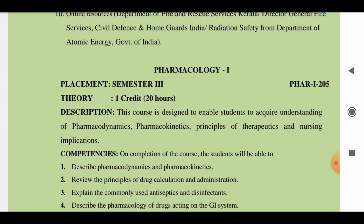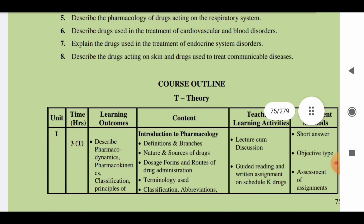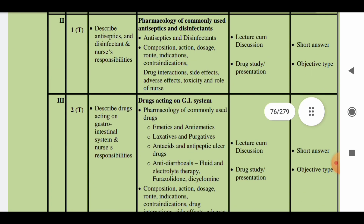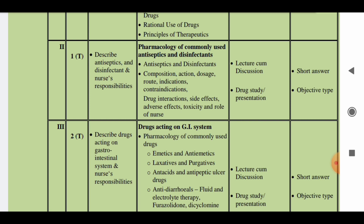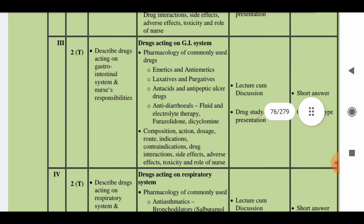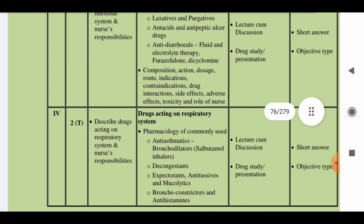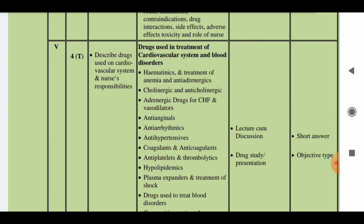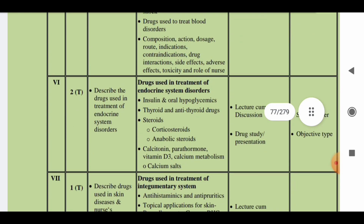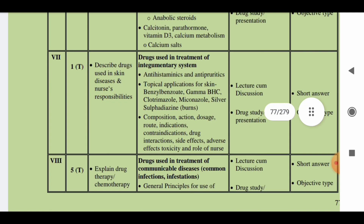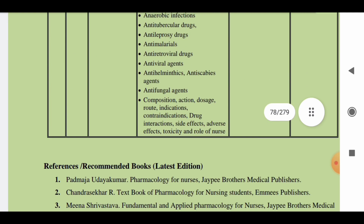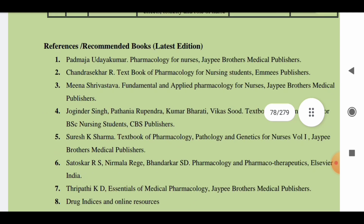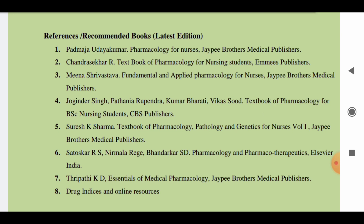The second subject is Pharmacology. You have 20 credit hours in Pharmacology. There are several units: Unit 1 covers introduction, Unit 2 covers common antiseptics and disinfectants, Unit 3 covers drugs acting on the GI system, Unit 4 covers drugs acting on the respiratory system, Unit 5 covers drugs acting on the cardiovascular system, and Unit 6 covers drugs acting on the endocrine system. In total there are eight units. You can use any book prescribed by your teacher.